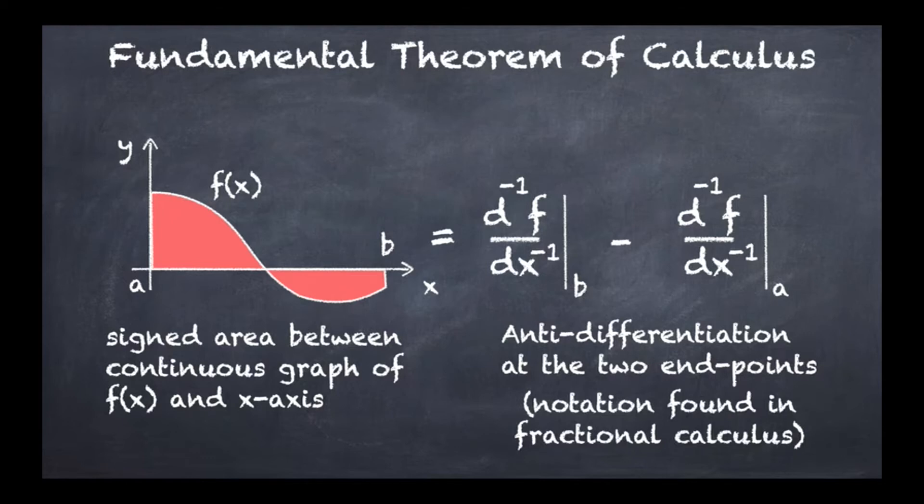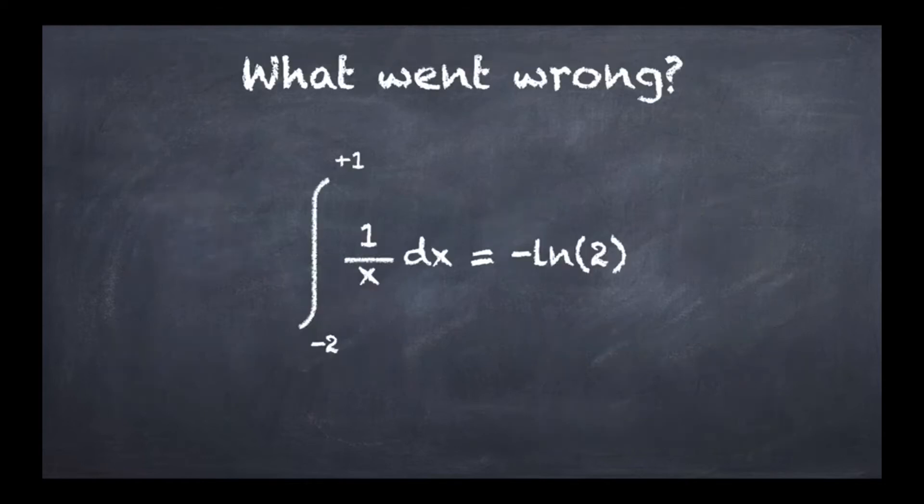Now let's go back then to understand what went wrong before. So we had that the integral from minus 2 to plus 1 of 1 over x dx was minus log of 2.